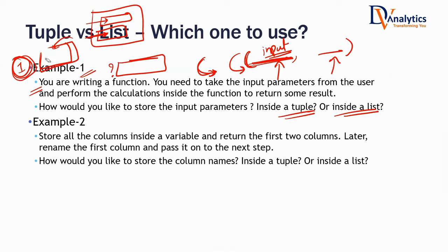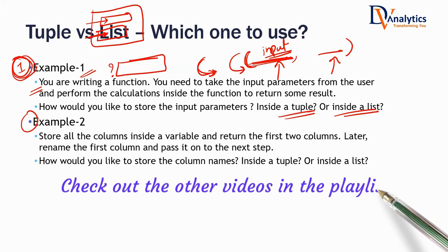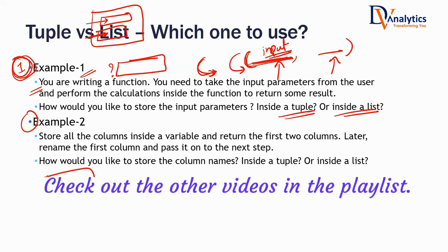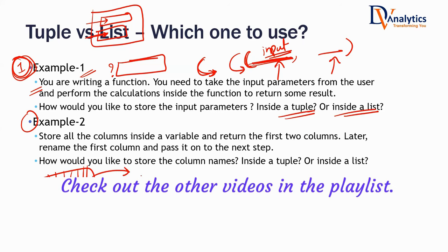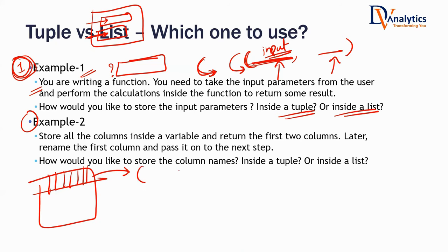Scenario two: store all the column names of a dataframe inside a variable and return the first two columns. I want to store all the column names in a collection — either a list or a tuple. Later, I want to rename the first column and pass it on to the next step because one column has a space or some problem. How do you like to store all the column names — in a tuple or a list?